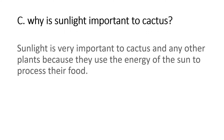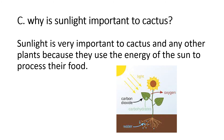The last question is: why is sunlight important to the cactus? Sunlight is very important to cactus and to all other plants because they use the energy of the sun to process their food, as we learned during our lesson on photosynthesis — wherein plants need the energy of the sun to make their food, called glucose or starch. That is why all green plants need sunlight, and not only cactus but all green plants.